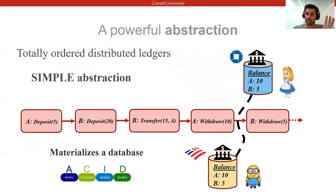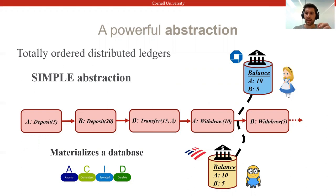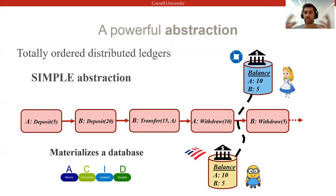Totally ordering transactions trivially maintains traditional ACID guarantees such as atomicity or isolation, and makes it easy for applications to materialize key-value stores on top. Alice and Bob, customers at cooperating but competing banks part of this BFT consortium, will experience the same database and hence consistent balances.